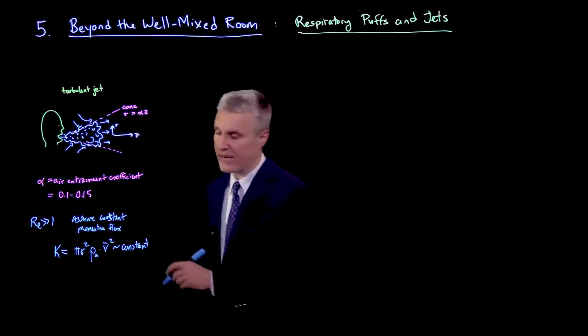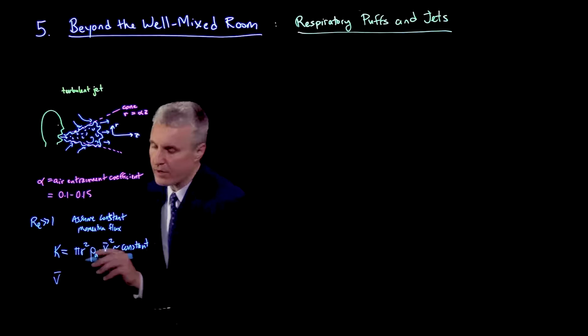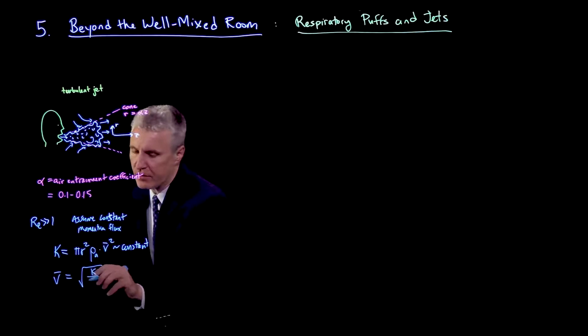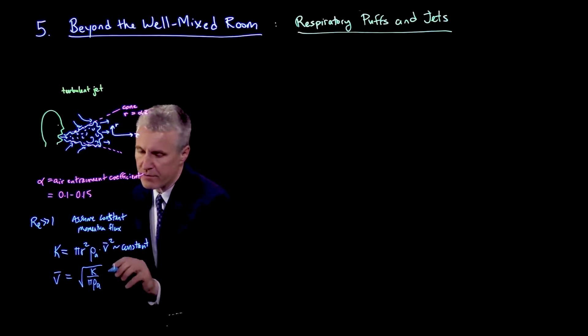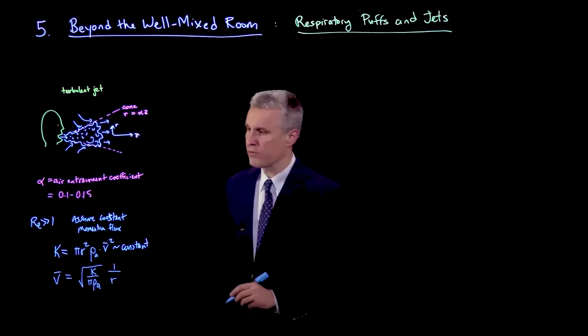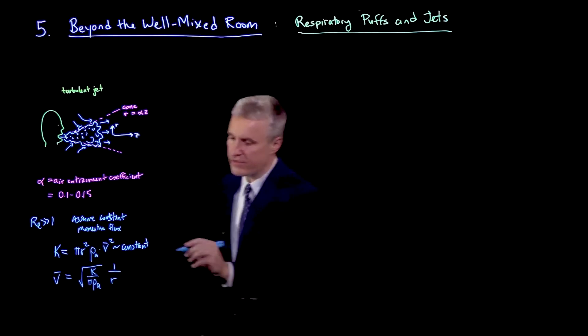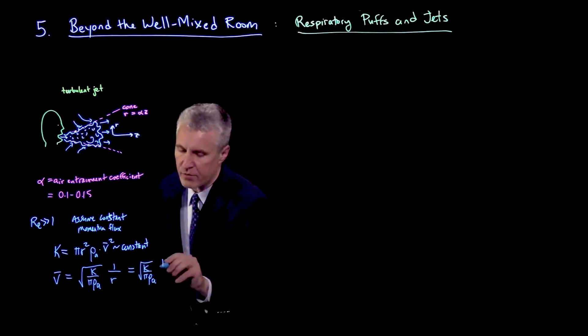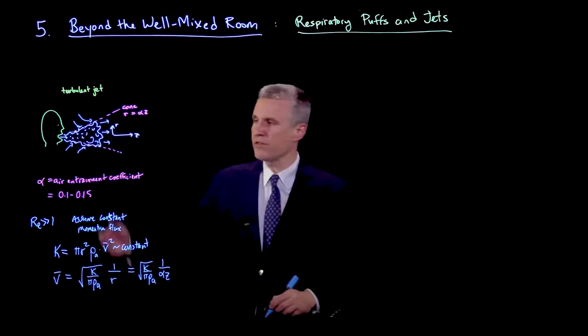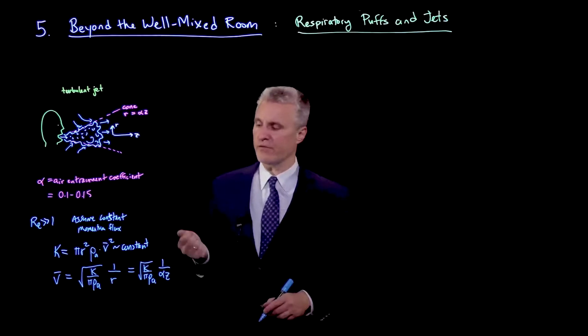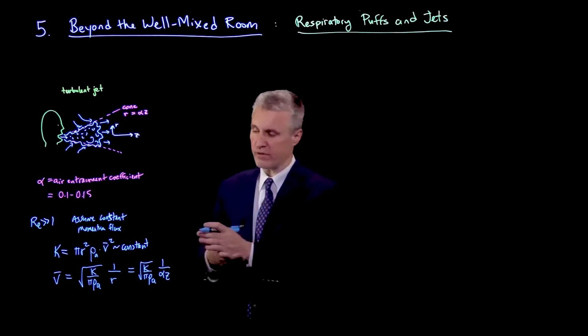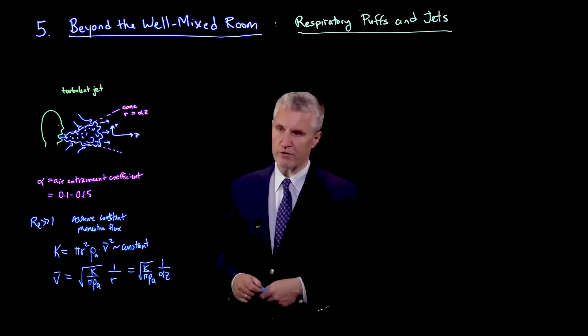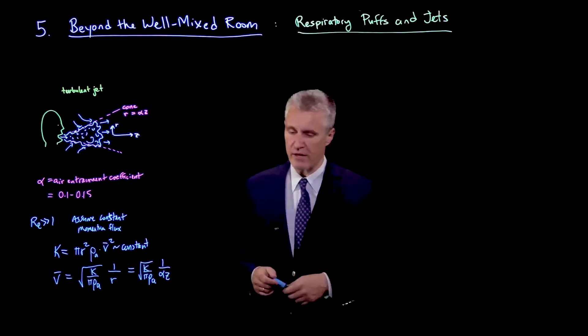So we can now solve for the average velocity, v bar, which would be the square root of k over pi rho a times 1 over r, after we take the square root. But then because we have a cone, r is alpha z. So this is square root of k over pi a, 1 over alpha z. So we can see the velocity is decaying like 1 over distance from the mouth. So the jet is slowing down, but it's still, of course, continuing to advance as the momentum is being shared across a larger and larger area of entrained turbulent flow.